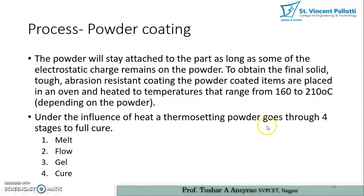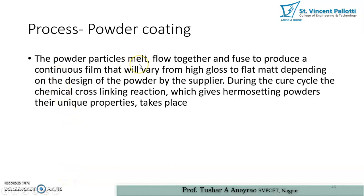Under the influence of heat, the thermosetting powder goes through four stages to full cure: first it melts, then it flows over the surface, then it develops a gel-like structure, and then it fully cures itself. The powder particles weld and flow together to fuse and produce a continuous film that will vary from high gloss to flat matte, depending on the design of the powder by the supplier. During the cure cycle, the chemical cross-linking reaction which gives thermosetting powders their unique properties takes place.